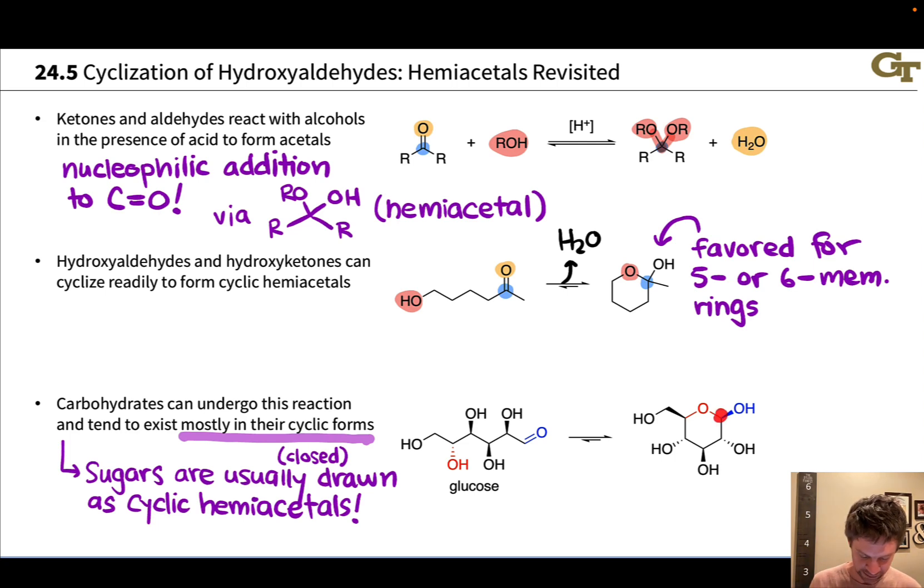Notice we have a carbon right here. This is the former carbonyl carbon in the open chain form or carbon one that's linked to an OH group and an OR group. That's a hemiacetal. And sugars are very commonly drawn in their cyclic hemiacetal forms.